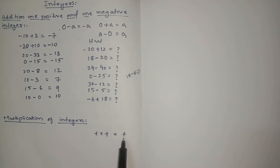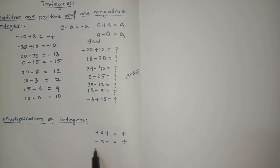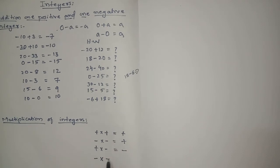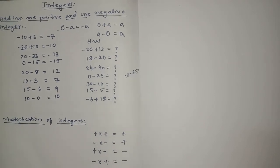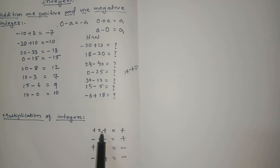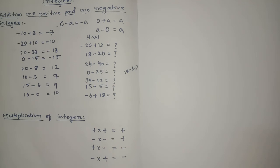Keep in mind the sign rules for multiplication: plus into plus is plus; minus into minus is also plus. Plus into minus is minus, and minus into plus is also minus. Multiplication of the same signs gives a positive result; multiplication of different signs gives a negative result. Whether it is plus into minus or minus into plus, the result is always negative.